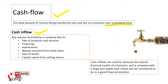Cash inflows are any money received by a company due to the sale of products and services, financing, investments, money received from bank loans, sale of assets, or capital raised from selling shares. Any money that comes into the business is a cash inflow. Cash inflows are used to measure the overall financial health of a business, and a company with a large and stable cash inflow can be considered to be in a good financial position.